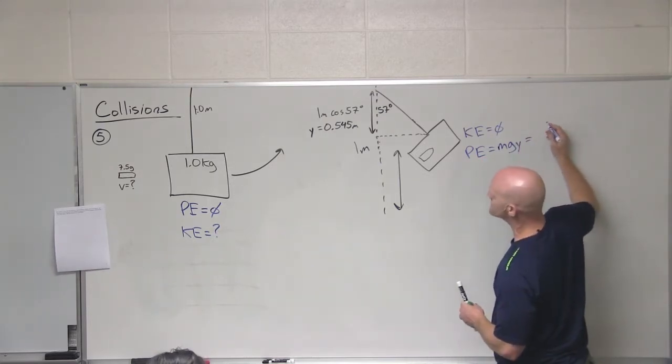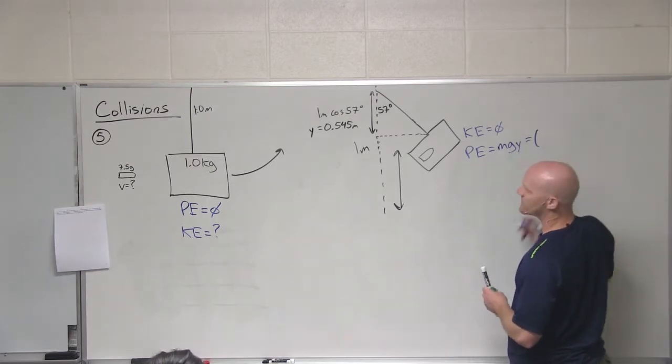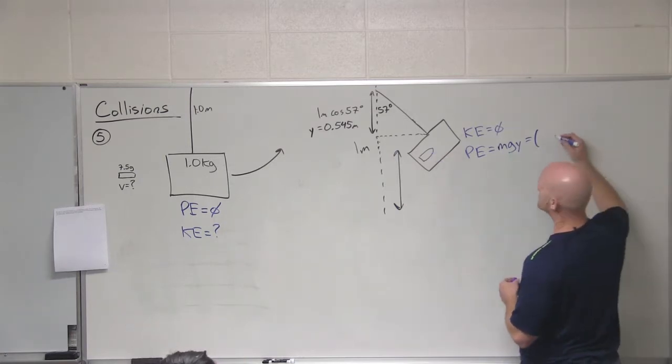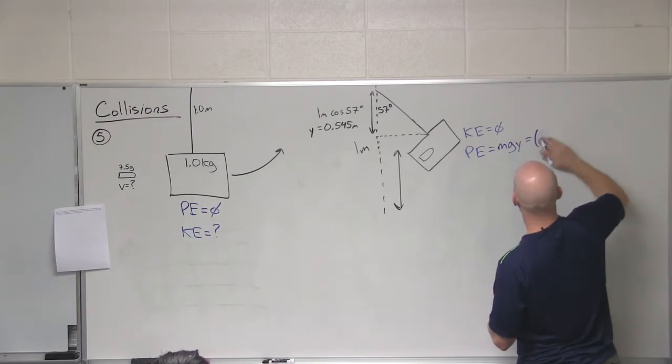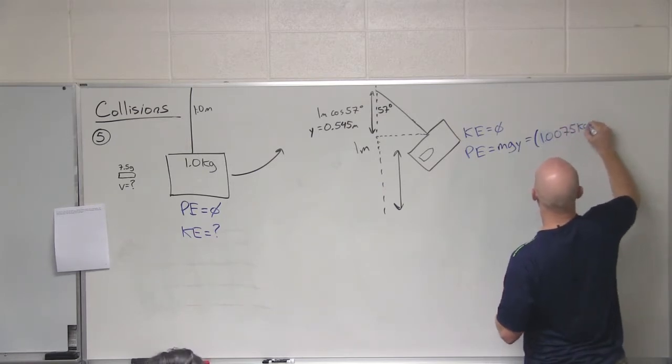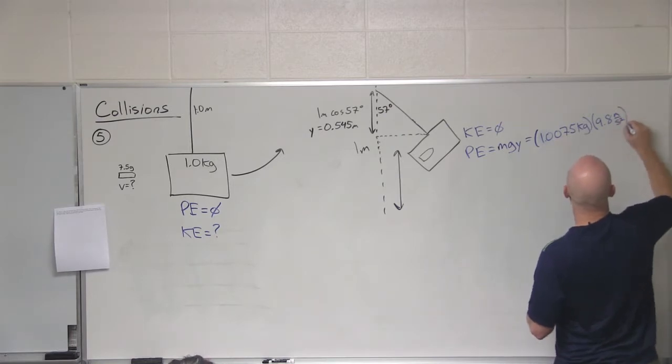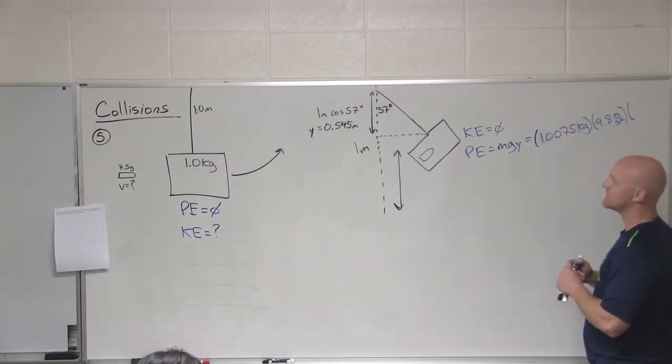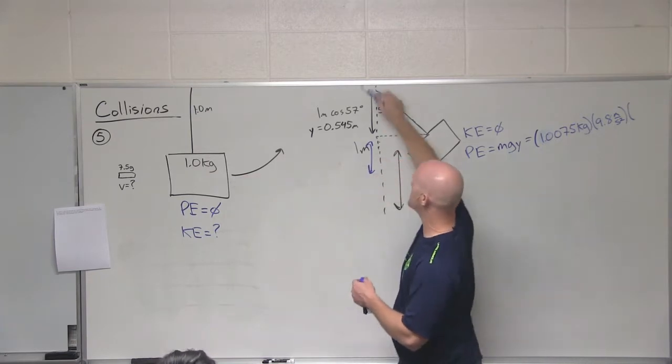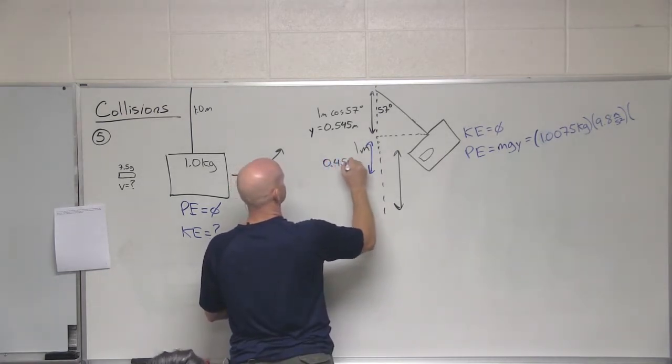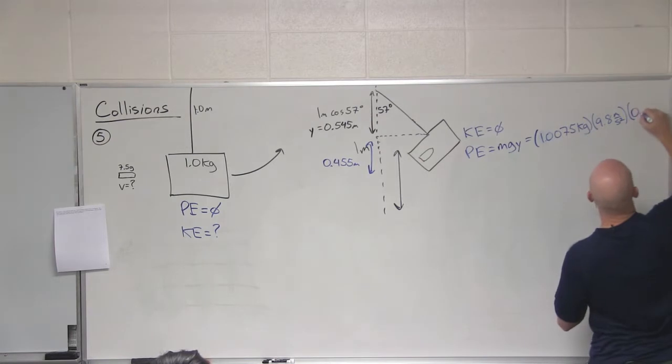And so then my potential energy here. So what was the mass of this thing or do we even know? Plus the thing. Yeah, there's a bullet stuck in it now. So what's the mass? 1.0075 kilograms. 1.0075 kilograms and 9.8 meters per second squared. And then a height of, what is the height? Height is 1 minus, right? So how much higher are we than where we started here? If this whole length is 1 and this is 0.545, then what is our height? Great. That's what's going to get plugged in here.